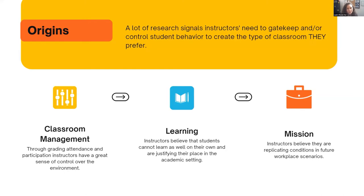Reading these articles was really a journey of self-reflection. Instructors believe students cannot learn as well on their own, justifying their place in the academic setting — obligating students to come to class partly says 'you need me.' It is scary to realize perhaps a student misses half the semester, still passes, and still learns what they needed. That's admitting: am I needed? Can they just go online and practice another way? Part of the research says we have to let go of this fear, because people can miss a ton of class and still do well on exams.